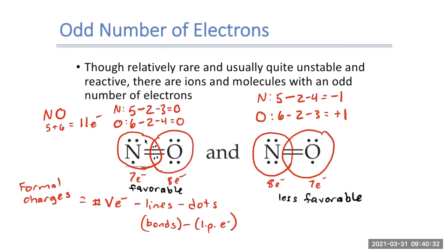So more often than not, nitrogen will have just seven electrons around it and oxygen will have eight. This also makes sense when we think about electronegativity — oxygen is more electronegative than nitrogen, so it wants that electron more, which is one reason why structure one is the more stable configuration.